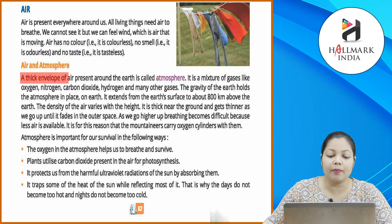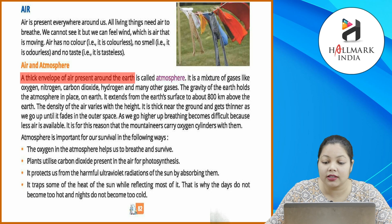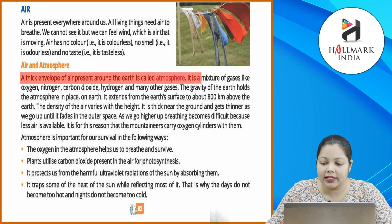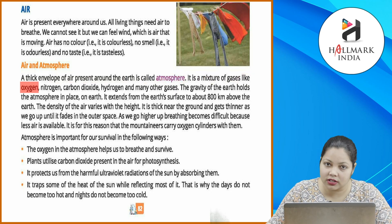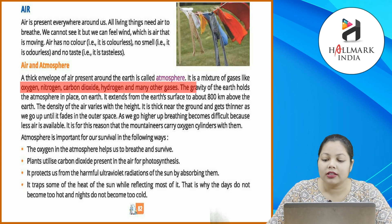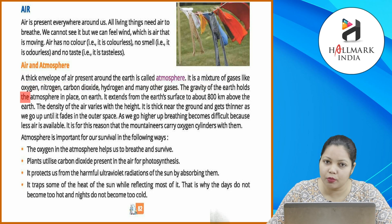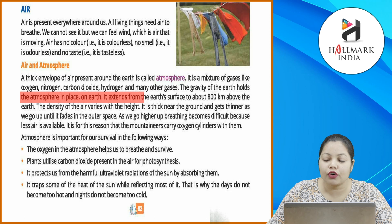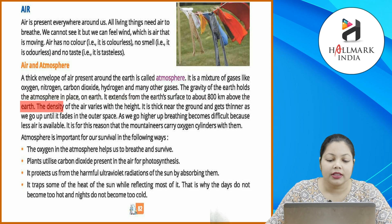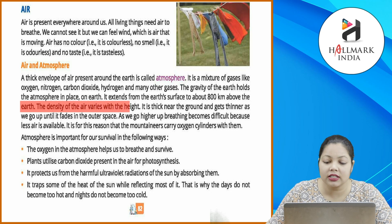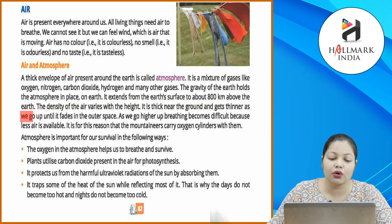Air and atmosphere: a thick envelope of air present around the earth is called the atmosphere. It is a mixture of gases like oxygen, nitrogen, carbon dioxide, hydrogen and many other gases. The gravity of the earth holds the atmosphere in place. It extends from the earth's surface to about 800 kilometers above the earth. The density of air varies with height — it is thick near the ground and gets thinner as we go up.